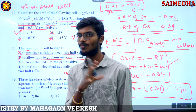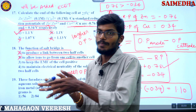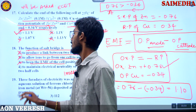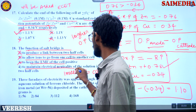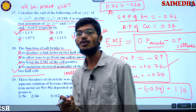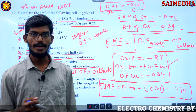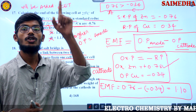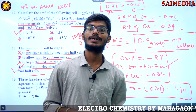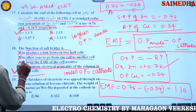The salt bridge is not meant for transferring ions, and to keep the EMF of the cell positive is also not the answer. The correct answer is: to maintain electrical neutrality of the solution in the two half cells. That is the function of the salt bridge — the fourth option.